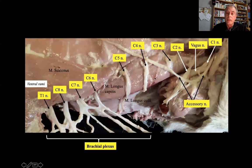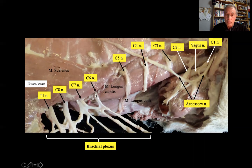Here is another view — cranial is here, caudal is here. You can see under the scalenus muscle the ventral rami that form the brachial plexus: C6, C7, C8, and T1.